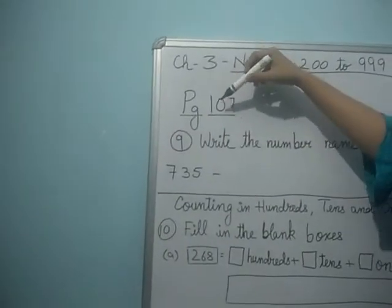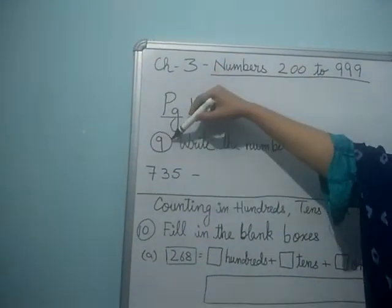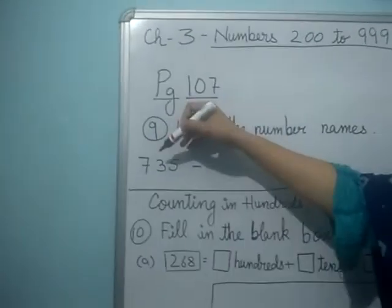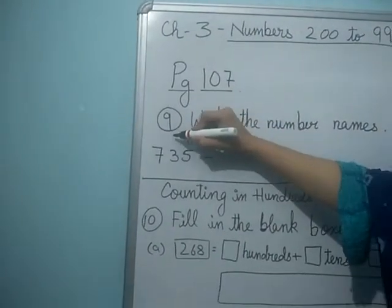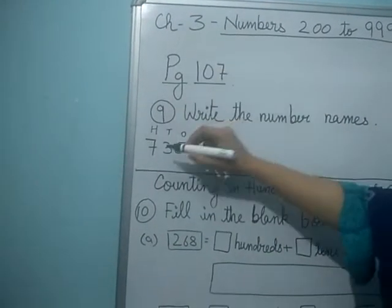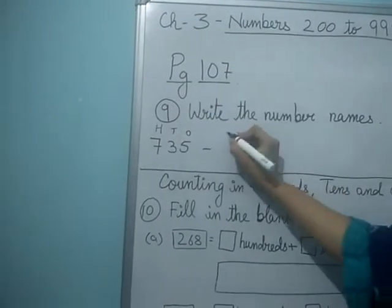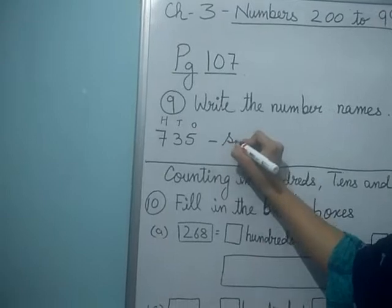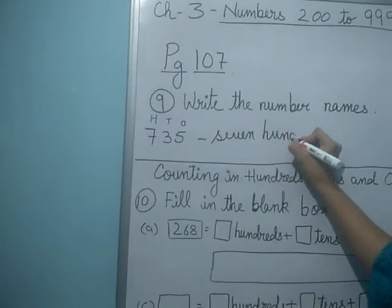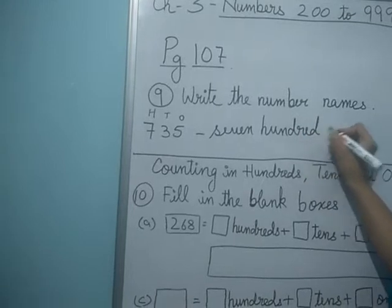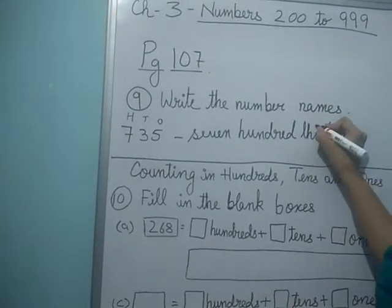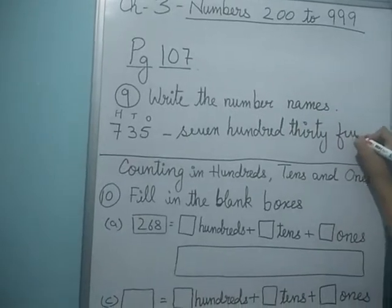So in page number 107, it is starting from number 9. Write the number name. Which number is this? This is in 1's place, this is 10's place and this number is in 100's place. So this will be 7135.